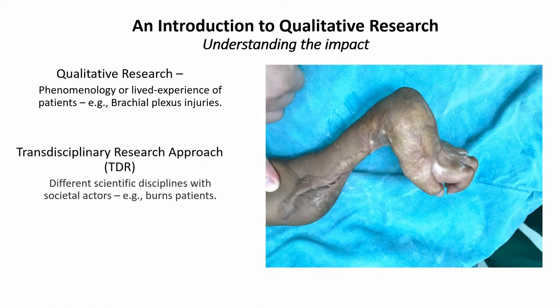We're going to look at two research methodologies to understand the impact of devastating injuries on patients, their families, and community — specifically looking at their needs, their coping strategies, and how they can best be supported. The first would be qualitative research using phenomenology, or lived experience of patients, and the example would be brachial plexus injuries.